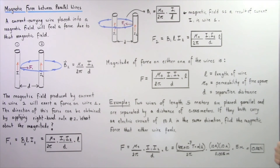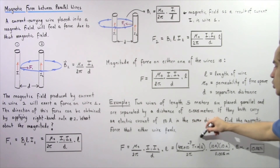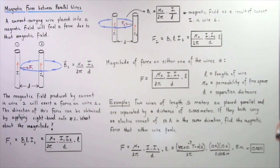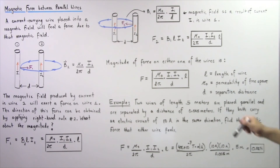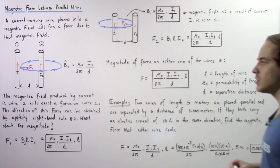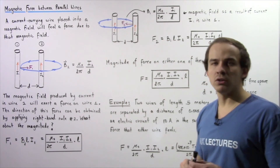Applying the equation: μ₀ = 4π × 10⁻⁷ T·m/A, I1 = I2 = 10 A, L = 5 m, and d = 0.005 m. Multiplying and dividing, the magnitude of the magnetic force is 0.02 newtons. This is the force that either wire feels as a result of the other parallel wire.